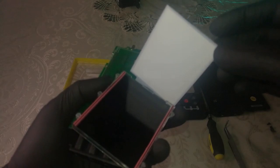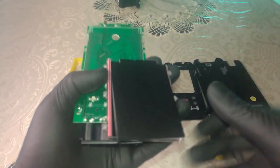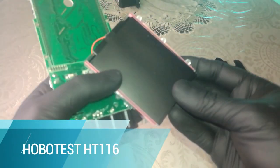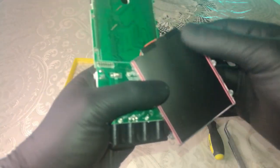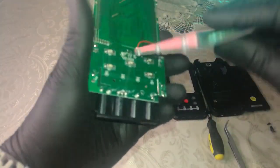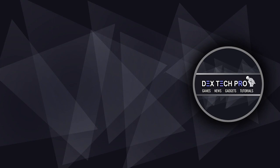If you want to know the product specification or data sheet, you better Google its name and model, which is Hobotest HT-116. That's the end of this demonstration. Thank you for watching and have a good one. Subscribe to DexTech Pro YouTube channel.